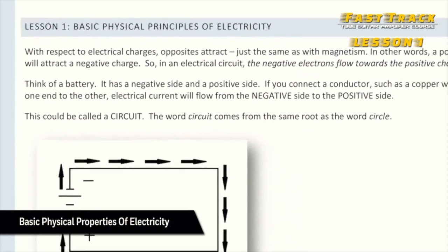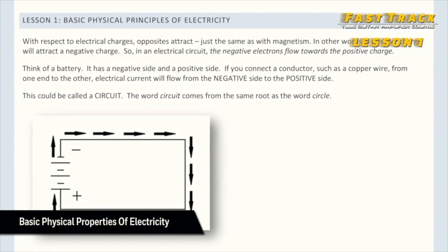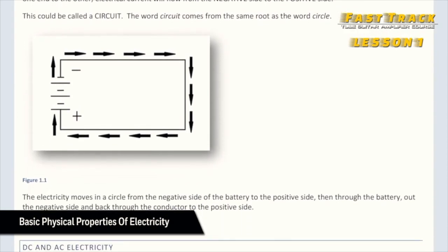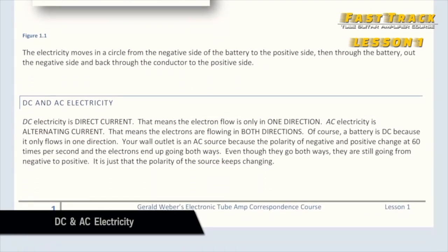Lesson one: with respect to electrical charges, opposites attract — the same as with magnetism. In an electrical circuit, negative electrons flow towards the positive charge. Think of a battery: it has a negative and a positive side. If you connect a conductor from one to the other, electrical current will flow from negative to positive — this is called a circuit. There are two types of electricity: DC (direct current) where electrons flow in one direction, and AC (alternating current) where electrons flow in both directions.